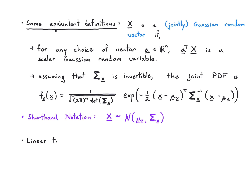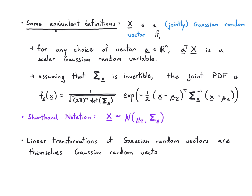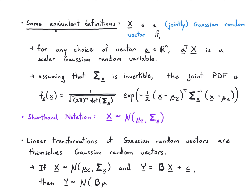The most important property is that linear transformations of Gaussian random vectors remain Gaussian. Specifically, if x is a Gaussian vector with mean μ_x and covariance matrix Σ_x, and we apply the linear transform y = Bx + c, then y is also a Gaussian random vector with mean vector B·μ_x + c and covariance matrix B·Σ_x·B-transpose.